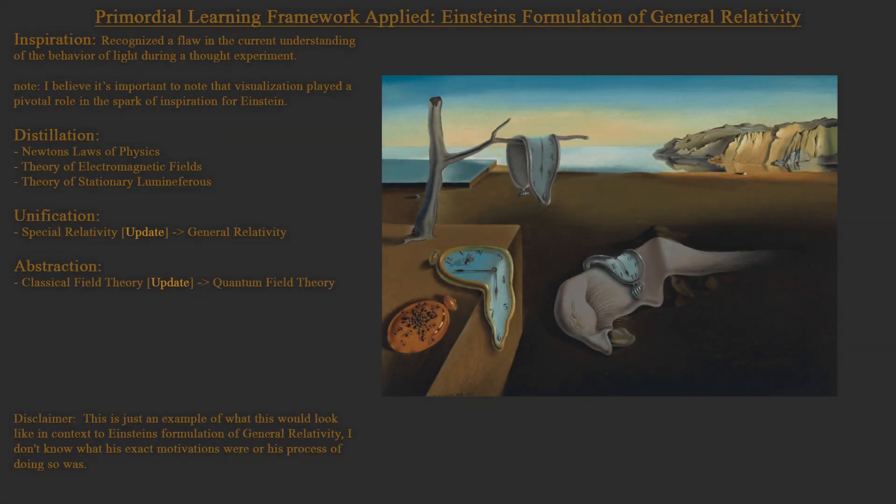Getting to the actual example, so I'm using Einstein's formulation of General Relativity. And just as a disclaimer, this is like a general outline of the discovery, the formulation of General Relativity in the context of this framework. So for his inspiration, it stemmed from the source, the ether, his inner world.